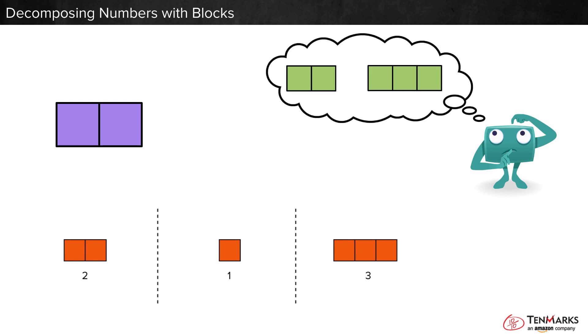How many blocks are in the other part? One, two, three. Three blocks. Two and three make five.